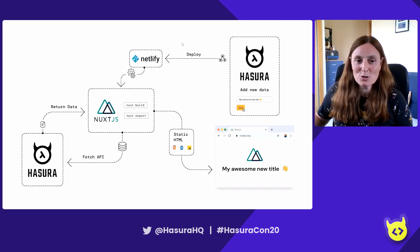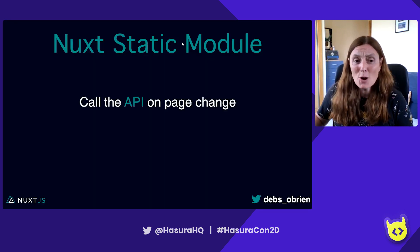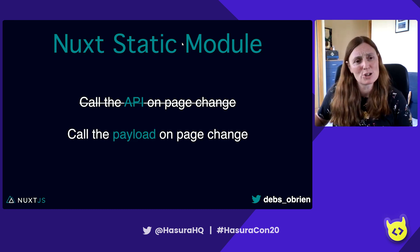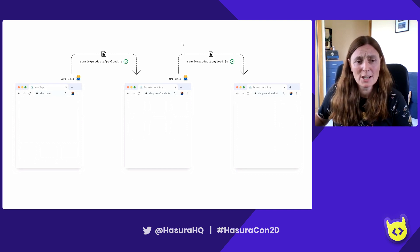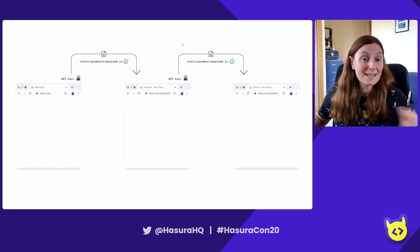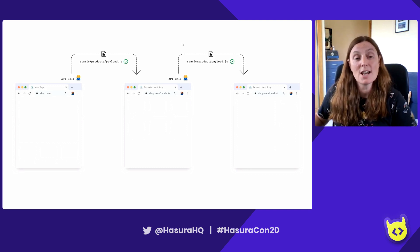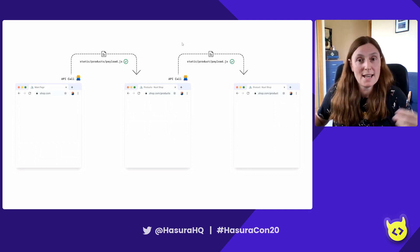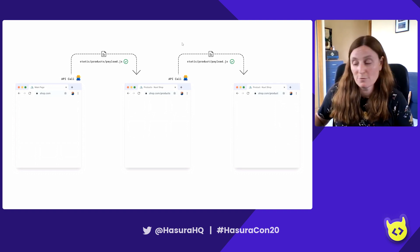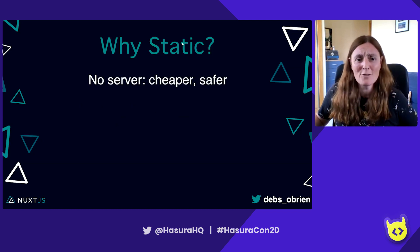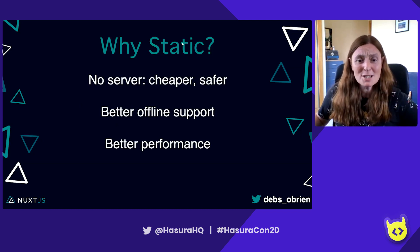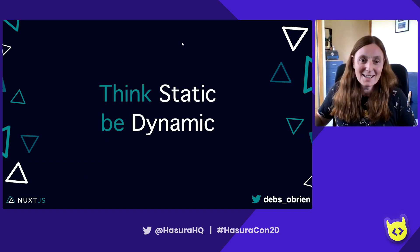So the Nuxt static module - does it call the API on every page change? No, we call the payload on every page change. Inside the application when you navigate to another page, we do not call the API. We call the static folder, which has a payload JSON for every single page the data came from - the conference or workshop page - all from the payload folder. We never have to call the API except on build. So think static and be dynamic. Are you Nuxt? Thank you very much.